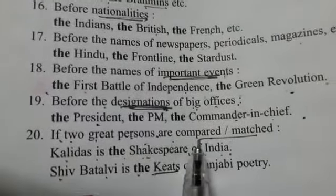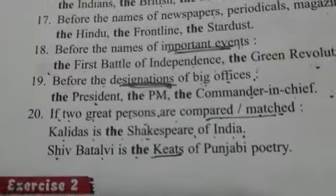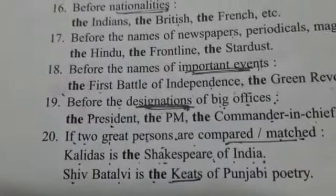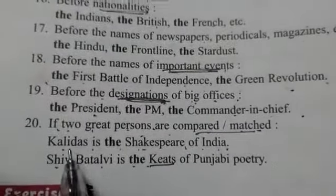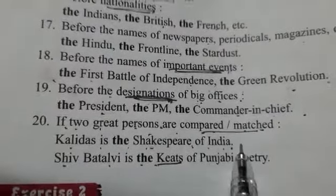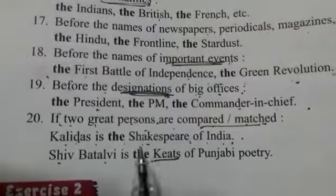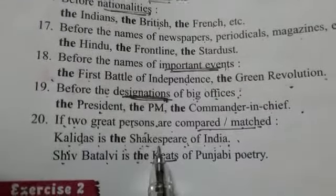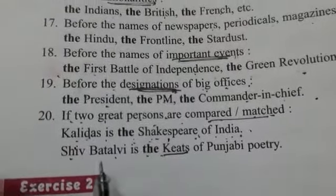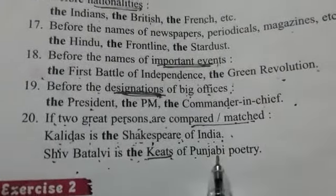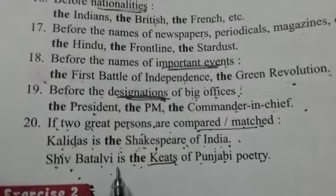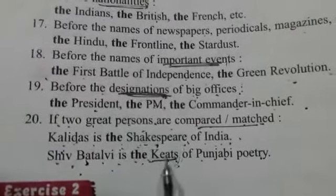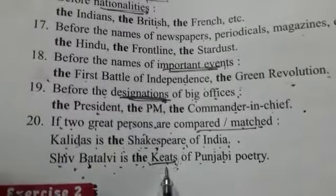Before the designations of big offices — like President, PM, Commander-in-Chief. Next, if two great persons are compared — agar do persons ko hum compare kar rahe hain. Like 'Kalidas is the Shakespeare of India' — Kalidas ko India ka Shakespeare bula jata hai. Similarly, 'Shiv Batalvi is the Keats of Punjabi poetry' — ek poet ko doosre poet se compare kara ja raha hai.